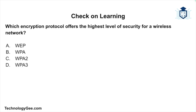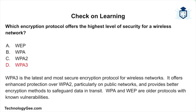Question 2: Which encryption protocol offers the highest level of security for a wireless network — WEP, WPA, WPA2, or WPA3? The answer is WPA3. It is the latest and most secure encryption protocol for wireless networks, offering enhanced protection over WPA2, particularly on public networks, and providing better encryption methods to safeguard data in transit. WPA and WEP are older protocols with known vulnerabilities.